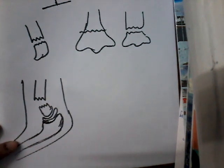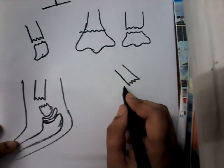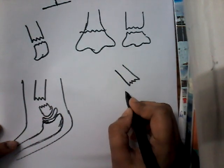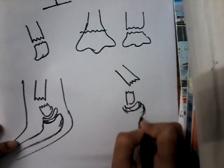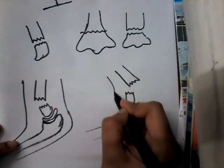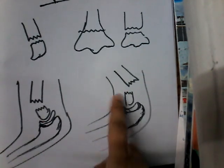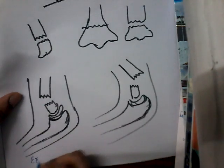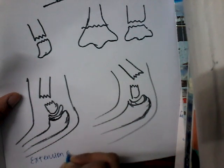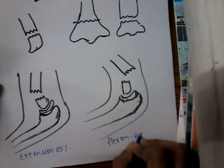Extension type is more common, seen in 80% of cases. In flexion type of supracondylar fracture, the proximal fragment is here, and now the distal fragment is tilted forward. So in flexion type the distal end is twisted forward. Extension type is seen in 80% of individuals and flexion type in 20% of individuals.